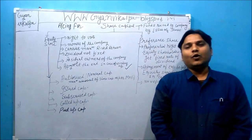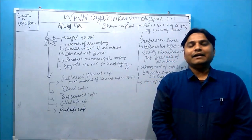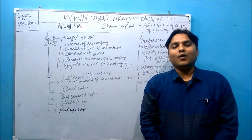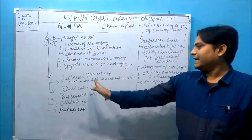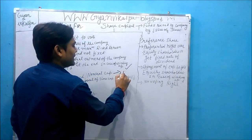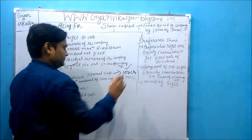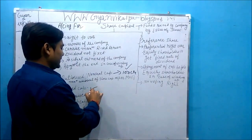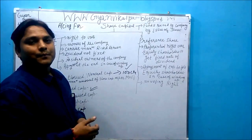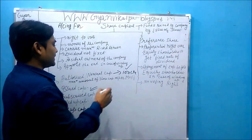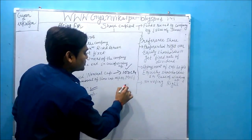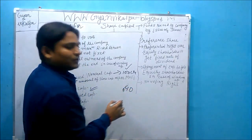If someone asks what do you mean by authorized capital or nominal capital, we say it is the maximum amount of capital that a company can issue or raise from the market as per their memorandum of association. For example, authorized or nominal capital of a company is 100 crore. Issued capital is that part of authorized capital which has been issued by the company to the general public for subscription — assume it is 40 crore.